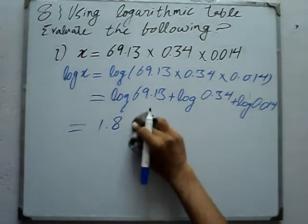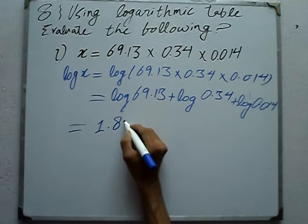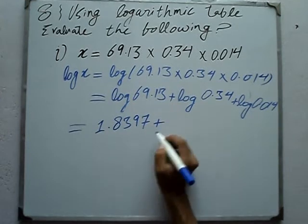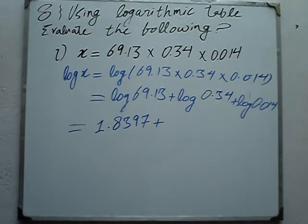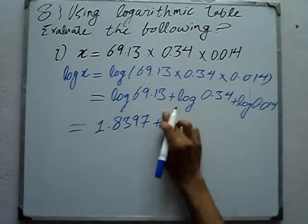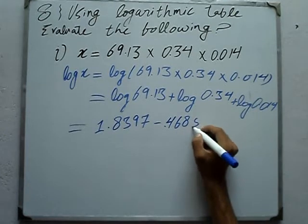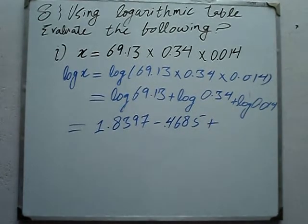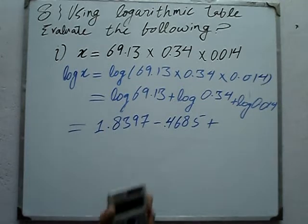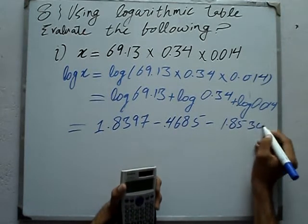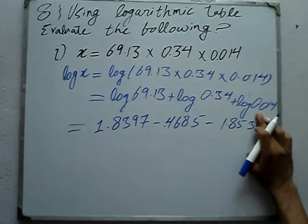So log 69.13 = 1.8396. Plus log of 0.034, which is minus 0.4685. Plus log of 0.0014, which is minus 1.8538.